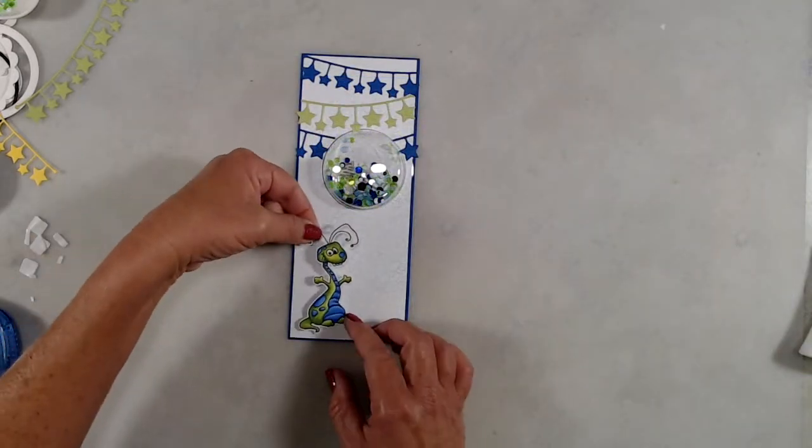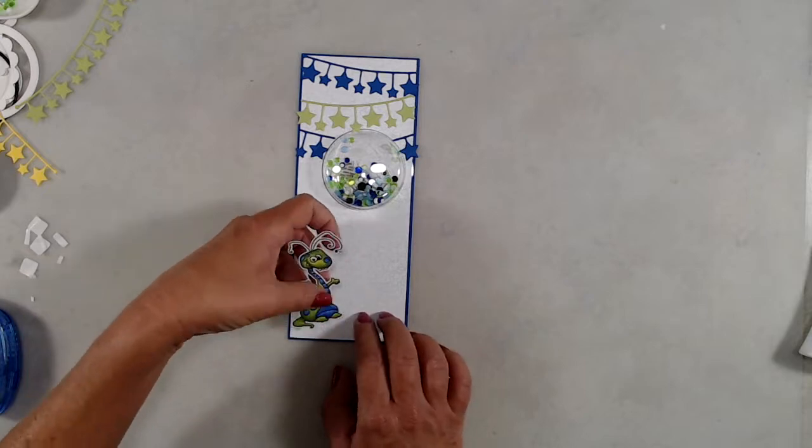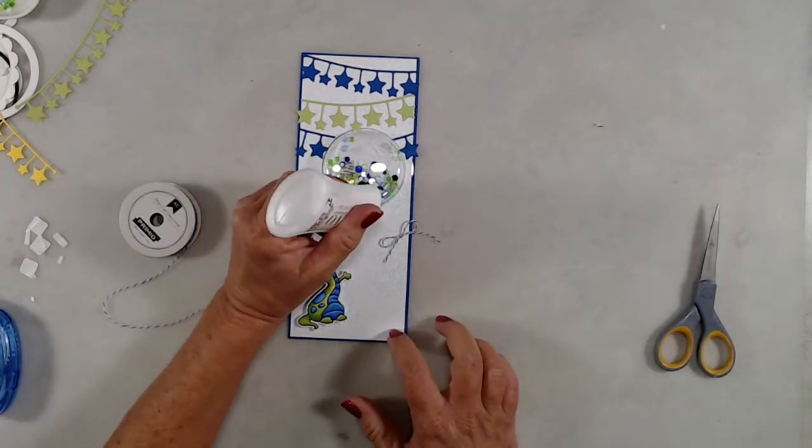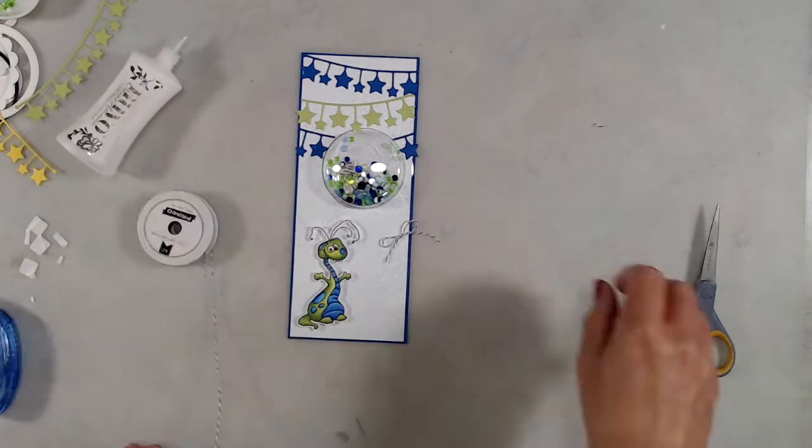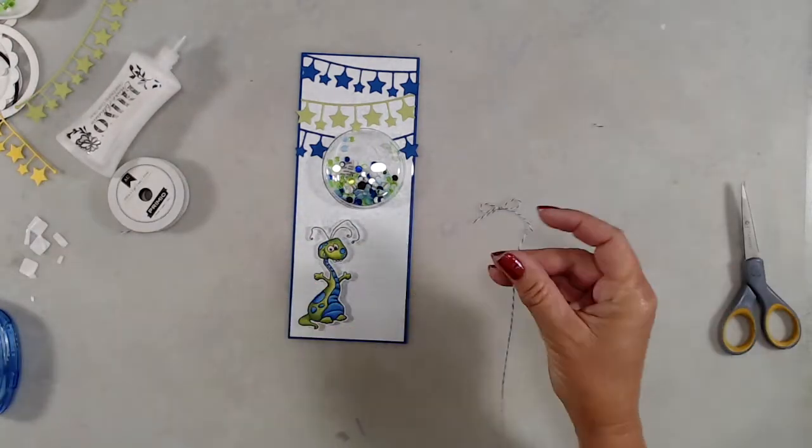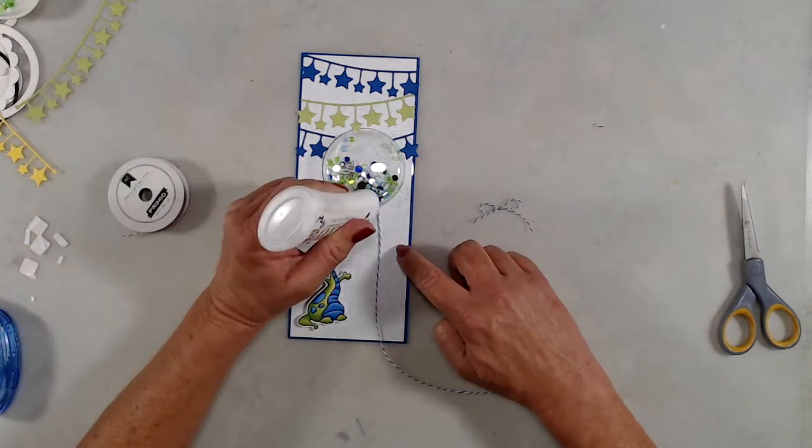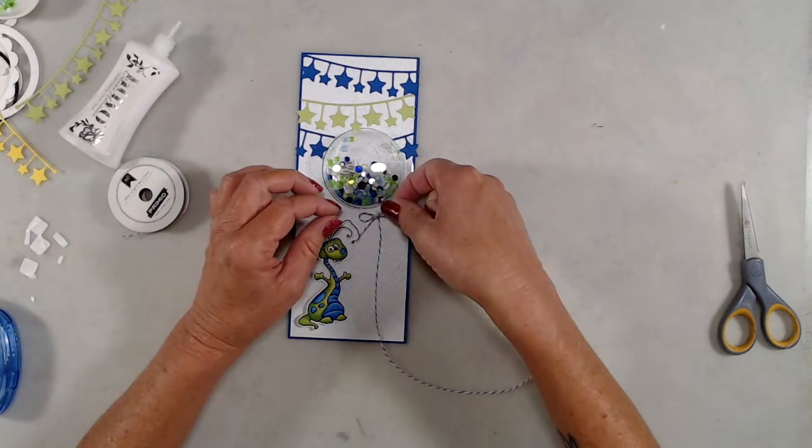I added a whole bunch of foam tape to the back of my little monster, and once I removed all that release paper, I added him down on the bottom. Once my little monster was adhered in place, I grabbed some blue and white baker's twine and tied a bow. I did just a small dollop of glue underneath the bubble, cut another piece of the baker's twine for my balloon string.